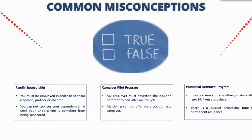Another misconception: you cannot sponsor your dependent child until your undertaking is complete from being sponsored. This is not true. There are persons who were sponsored but didn't include their child at the time, and now they're here and working but still under their sponsor's undertaking — they are concerned they cannot submit an application for their child independently. That is not the case. They are more than able to do so — it's just about showing financial capability.